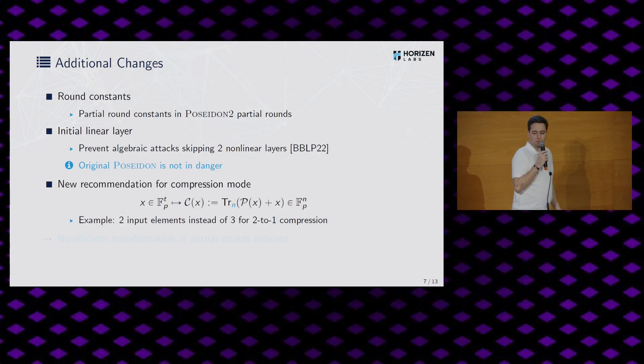And finally, also we propose a new compression mode. So this is very, very old, so to say. Instead of using the Sponge function, you can just do two-to-one compression or four-to-one compression and so on more directly by using such a compression mode. And if you're building a Merkle tree, for example, this can help a lot. And finally, a very nice message for all the developers and implementers. So this efficient transformation of the partial rounds is not needed anymore. Actually, it makes the whole thing a bit slower if you do that. And the good thing is that all the hundreds of constants you need to store all the matrices for the partial rounds. So this is not needed anymore with the new version of Poseidon.